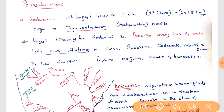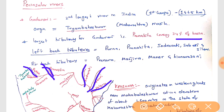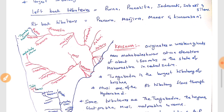Now we look at peninsular rivers. Godavari is the second longest river in India (first being Ganga), stretching 1,465 km. It originates at Trimbakeshwar near Nashik in Maharashtra. The largest tributary of Godavari is Pranhita, covering almost 34% of the basin. Left bank tributaries: Purna, Pranhita, Indravati, Sabari, Sileru. Right bank tributaries: Pravara, Manjira, Maner, Kinnerasani.